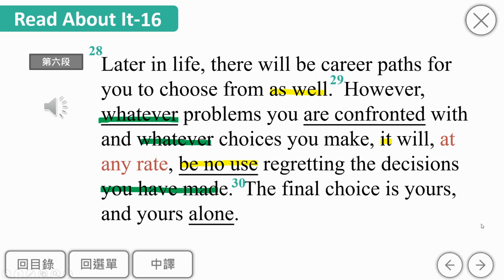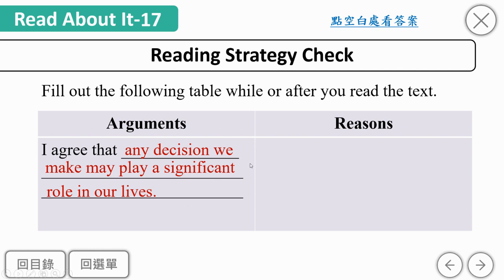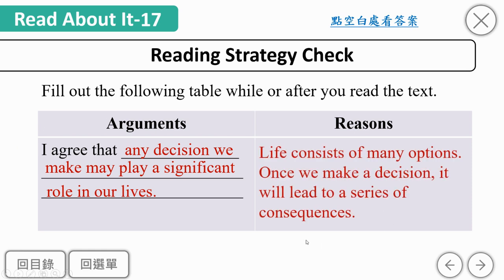这首诗在讨论common humanity，就是我们人生面临抉择时的心理状态：可能会有犹豫、纠结，或机会成本的概念，或者会想若非当初怎么样怎么样。最后我们回顾reading strategy：forming your opinion，你同不同意any decision we make may play a significant role in our life？文章后半段提到life consists of many options，once we make a decision, it will lead to a series of consequences。